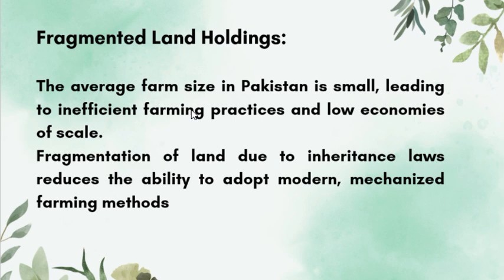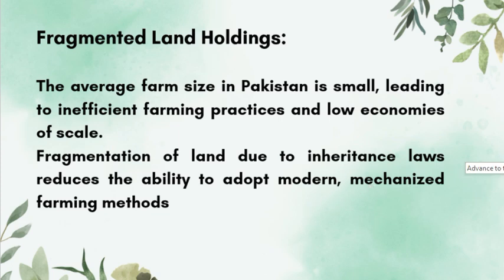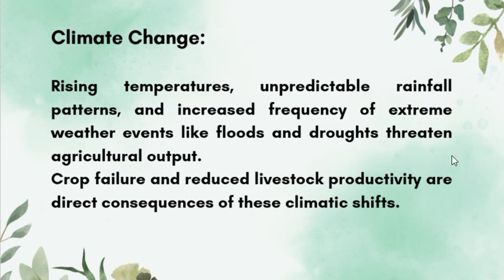The average farm size in Pakistan, where crops are grown, is very small. Land fragmentation is also being reduced due to inheritance losses, which is creating obstacles to productivity and causing losses in agricultural output.